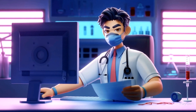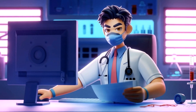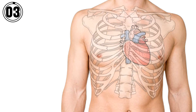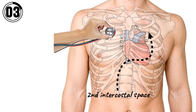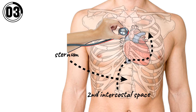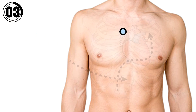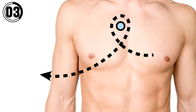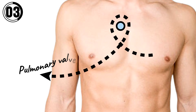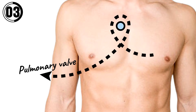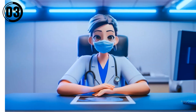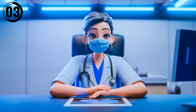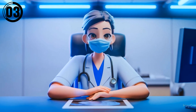The third one is for the pulmonary valve. For this auscultation point, the stethoscope should be placed at the second intercostal space and the left border of the sternum. This auscultation point is best to hear the pulmonary valve and murmurs like pulmonary stenosis. Let's see how pulmonary stenosis sounds.